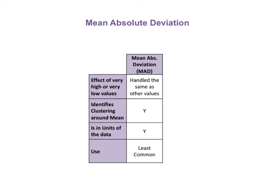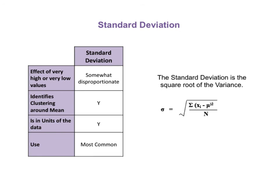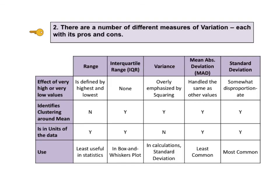This is explained in the video on variance. Also, we can just take the square root of the variance to get the standard deviation. The standard deviation is the square root of the variance. Compared to the variance, it can greatly reduce the disproportionate effect of high and low values, though extremely high or low values can still have outsized effects. The standard deviation does identify clustering about the mean, and it is in units of the data — much more useful than the squared units the variance gives us. There will be a separate video on standard deviation. Here on one page is a summary of these five measures of variation.